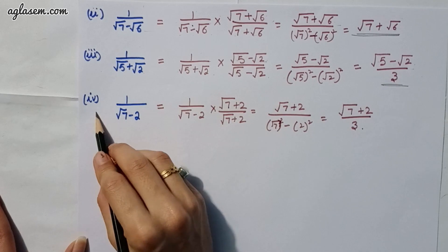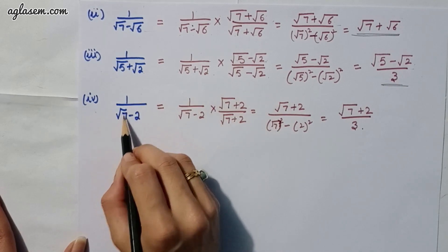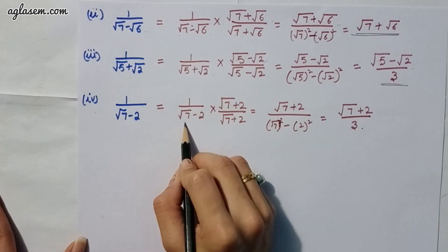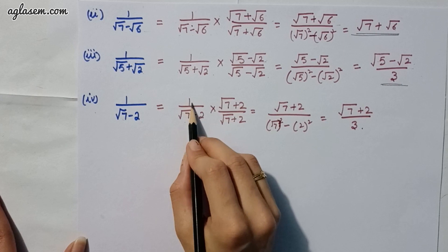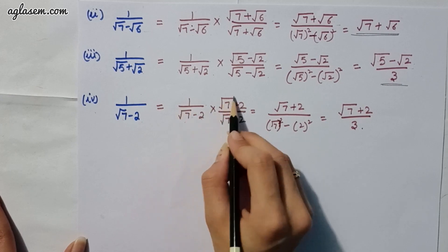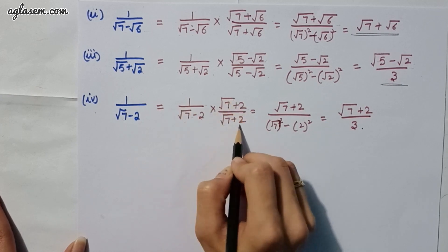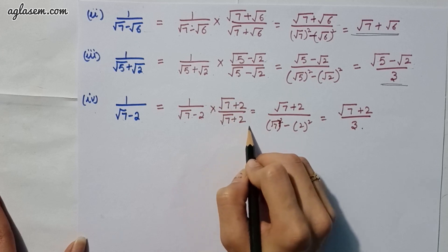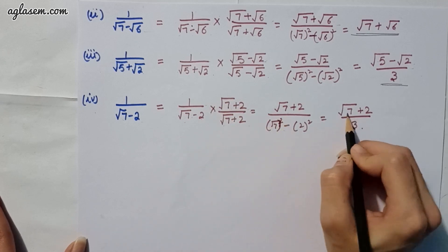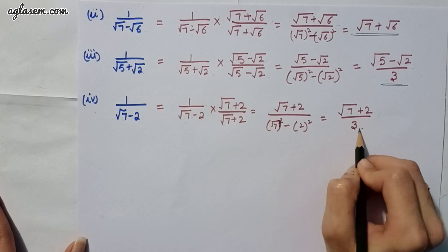Moving to our fourth part, which says 1 upon (root 7 minus 2). The answer is 1 upon (root 7 minus 2) multiplied by (root 7 plus 2) divided by (root 7 plus 2). By solving this, we get root 7 plus 2 upon 3.